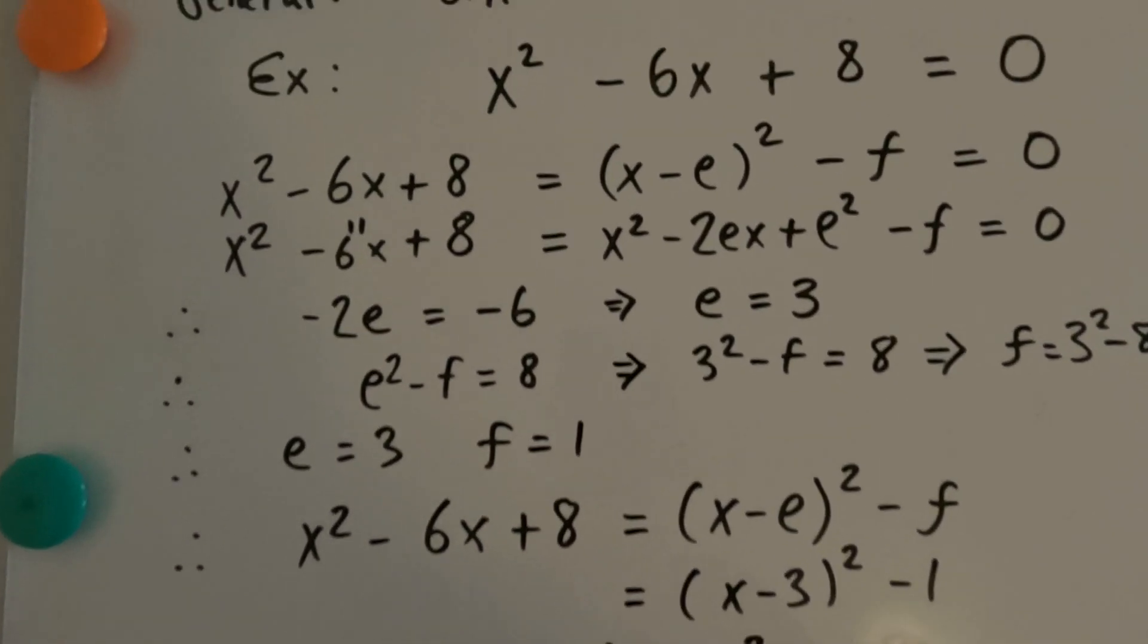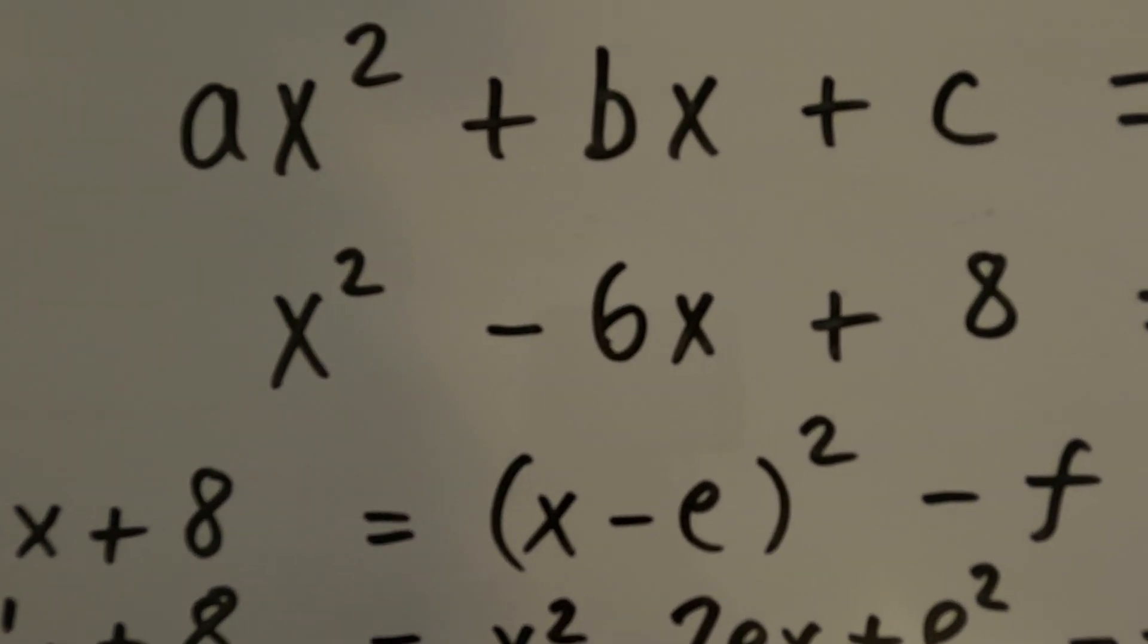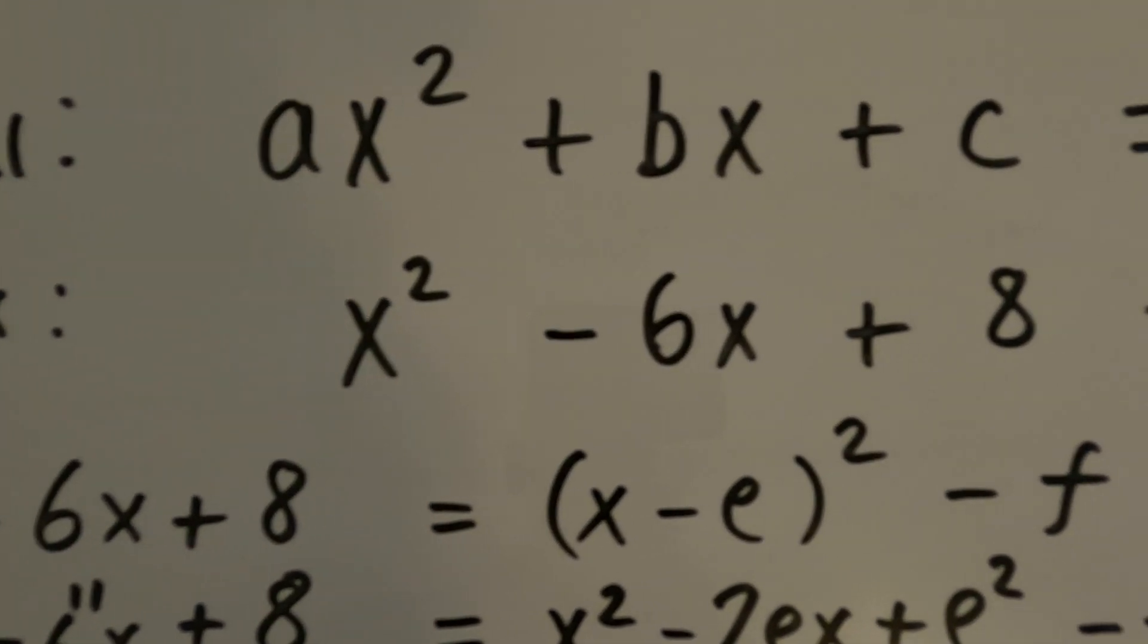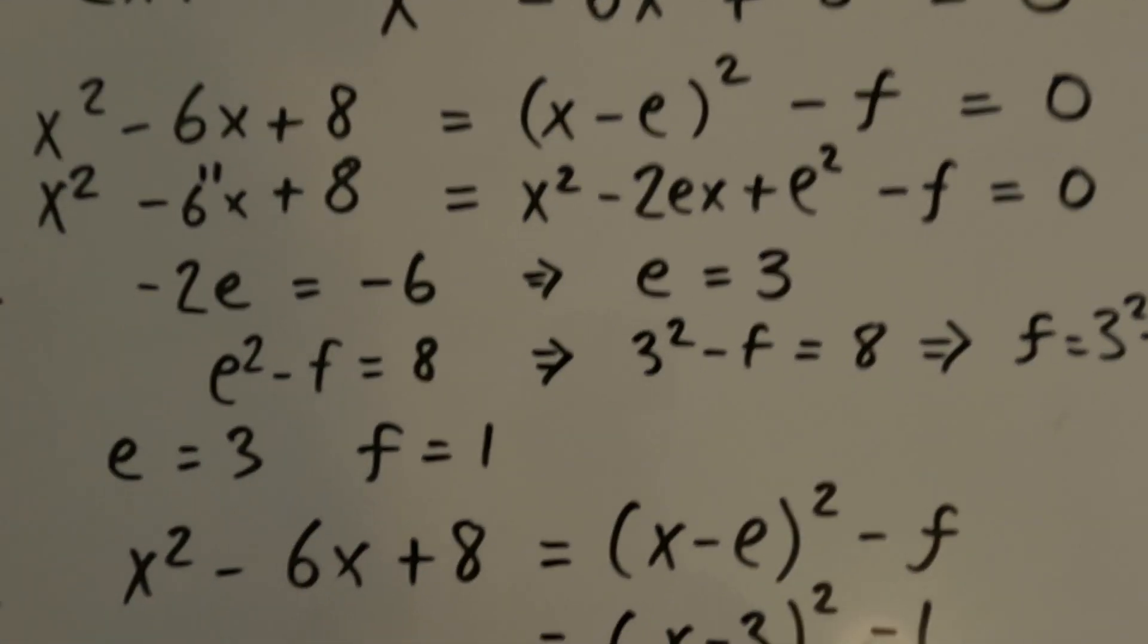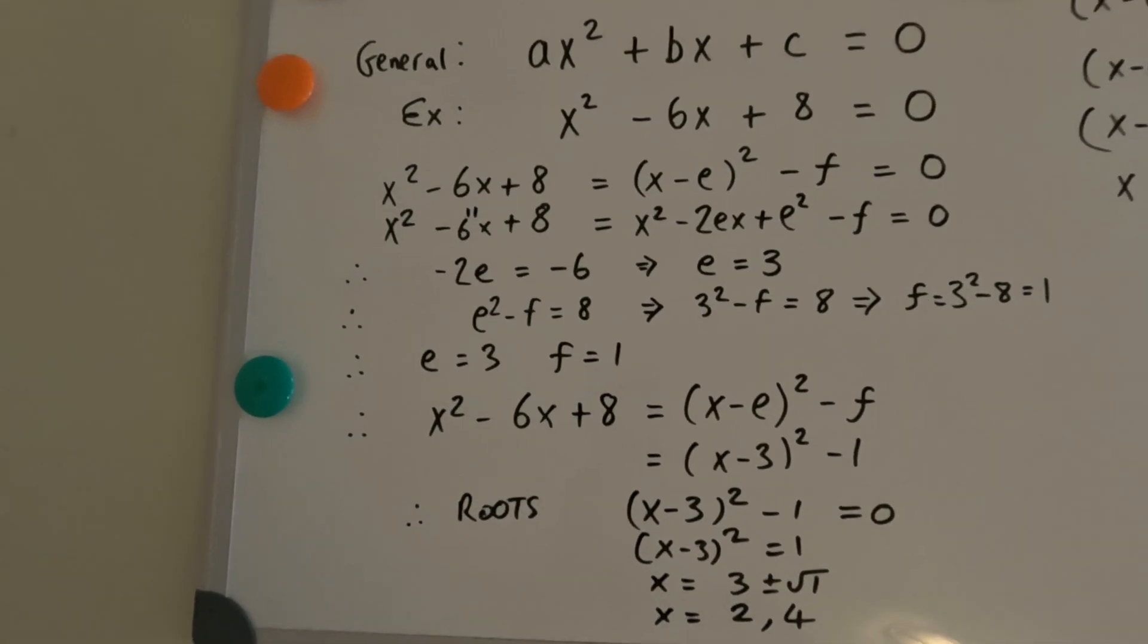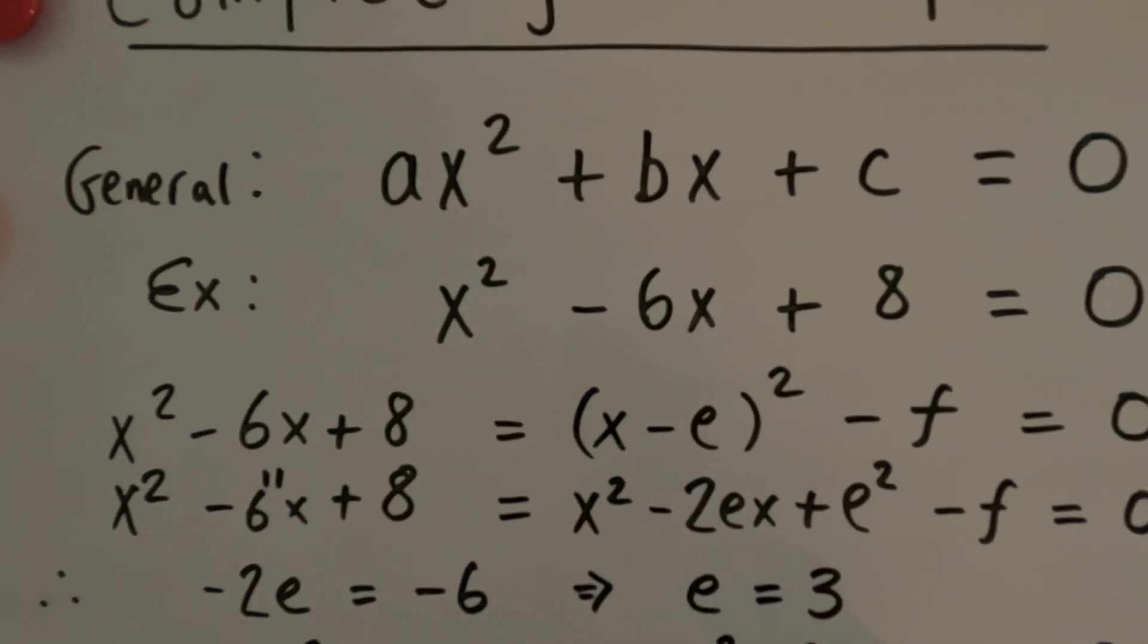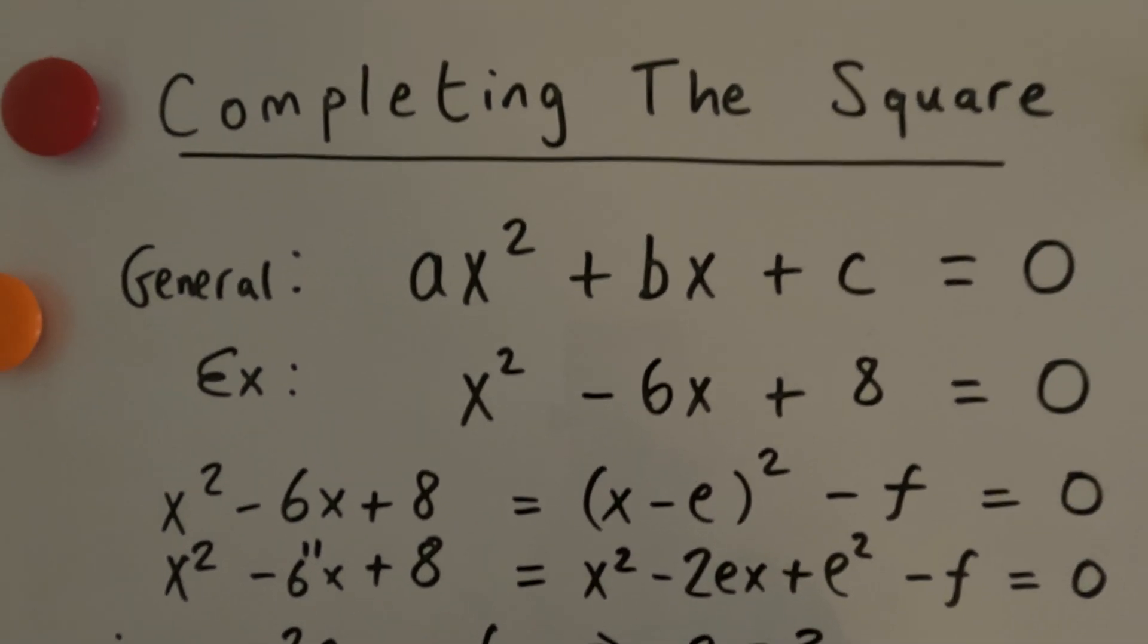And we can quickly verify that. Plug those back in. If x is 2, we get 2 squared is 4 minus 12 is minus 8 plus 8 is 0. If x is 4, we get 4 squared 16 minus 24 is minus 8 plus 8 is 0. So there only is two solutions. And we've found them. And we've found them by completing the square. We didn't do any fancy factorization or algebra or anything. Okay, we've strictly done it by completing the square.